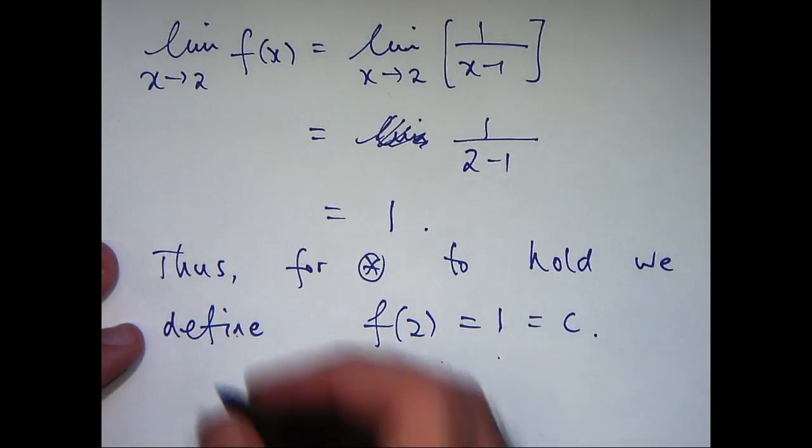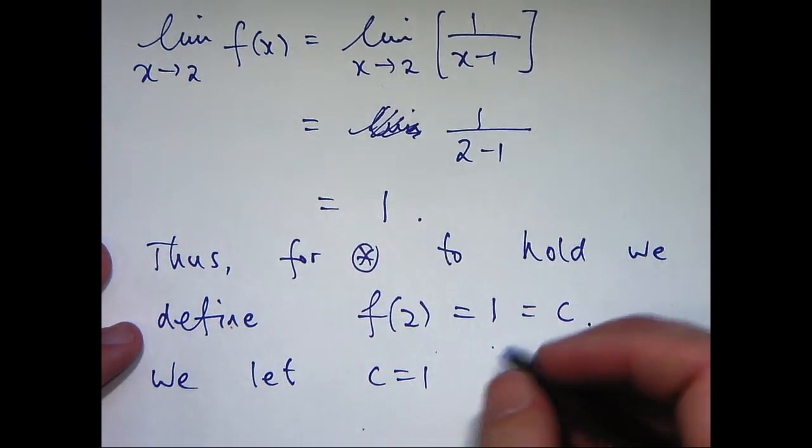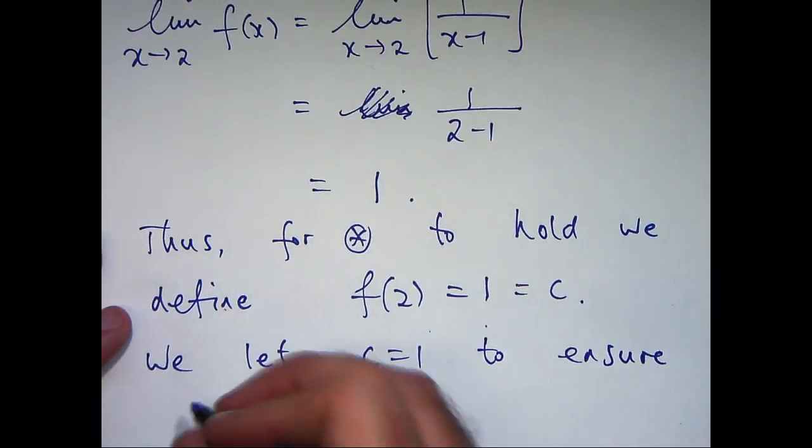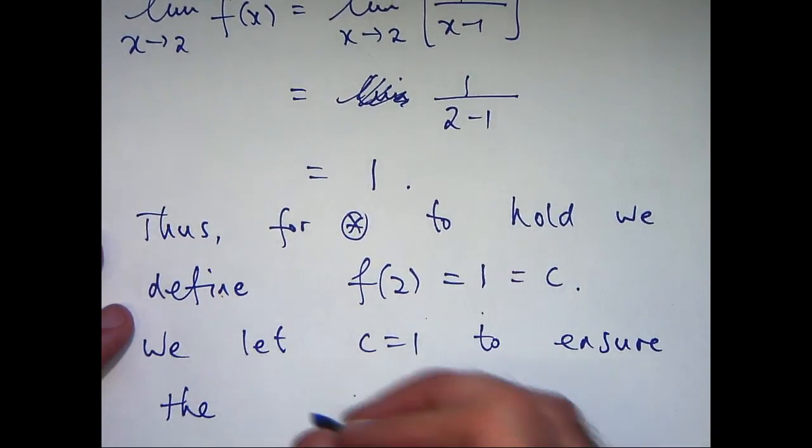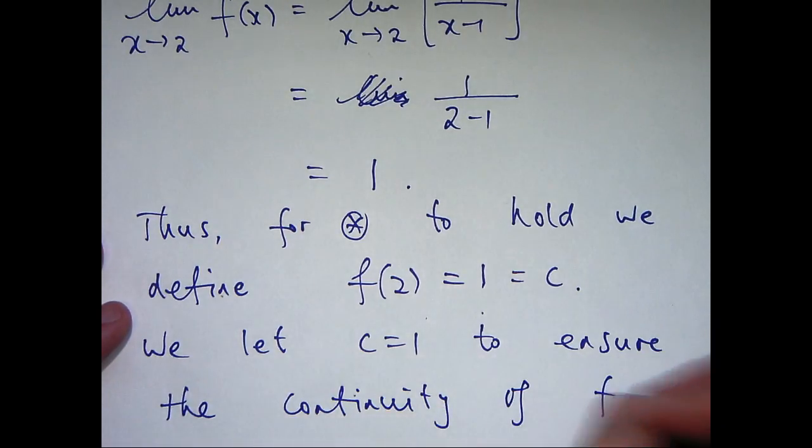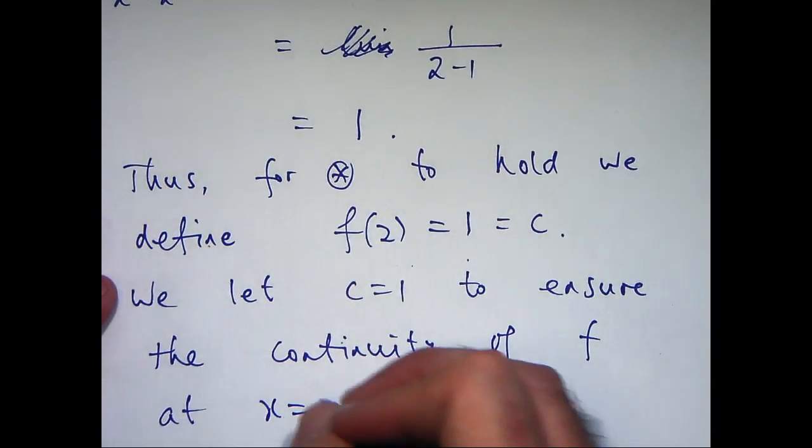So finally, let's make a conclusion. We let c to be 1 to ensure the continuity of f at the point x equals 2.